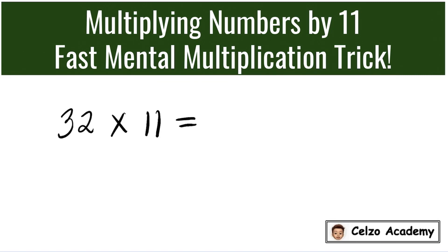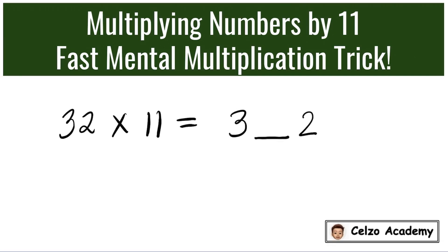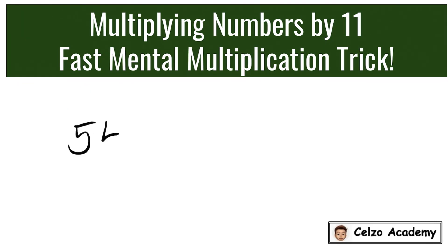Since we're multiplying 32 by 11, we will write first the numbers 3 and 2, but there is a space between them. The number between 3 and 2 is simply the sum of 3 plus 2, which is 5. So the answer is 352 — just add the digits 3 and 2, which is 5, and insert it between the numbers 3 and 2.